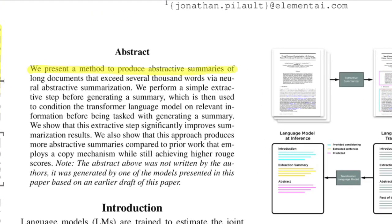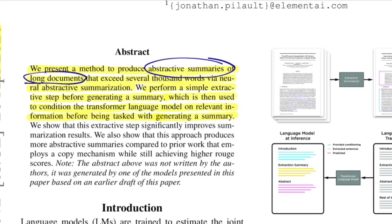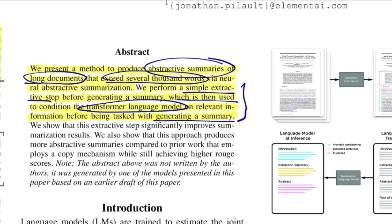The paper presents a method to produce abstractive summaries of long documents that exceed several thousand words via neural abstractive summarization. They perform a simple extractive step before generating the summary, which conditions the Transformer Language Model on relevant information. They show this extractive step significantly improves results and produces more abstractive summaries compared to prior work employing a copy mechanism, while still achieving higher ROUGE scores.